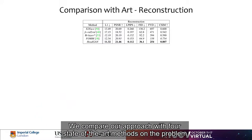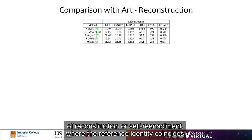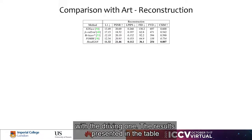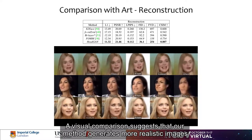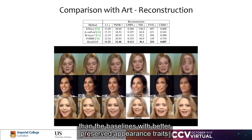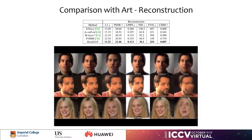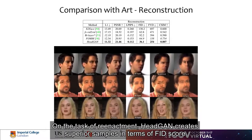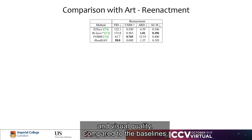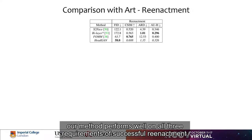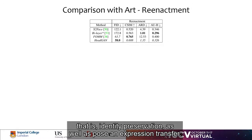We compare our approach with four state-of-the-art methods on the problem of reconstruction or self-reenactment, where the reference identity coincides with the driving one. The results presented in the table reveal that HeadGun outperforms all four baselines by a noteworthy margin in every single metric. A visual comparison suggests that our method generates more realistic results than the baselines, with better preserved appearance traits. On the task of reenactment, HeadGun creates superior samples in terms of FID score and visual quality, performing well on all three requirements: identity preservation as well as pose and expression transfer.